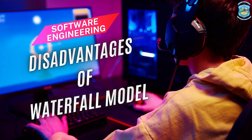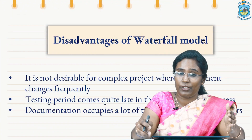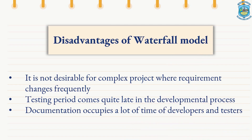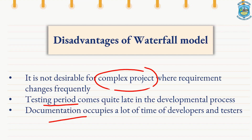There are some disadvantages of waterfall model. First, whenever the requirements are changing frequently, we cannot use waterfall model — it is not desirable for complex projects where requirements change frequently. Second, the testing phase comes quite late in the software development process, meaning if we need to conduct some testing in between, we cannot do so in the waterfall model. The last disadvantage is that documentation done at every stage occupies a lot of time for developers and testers, because of which more time is taken for software development.